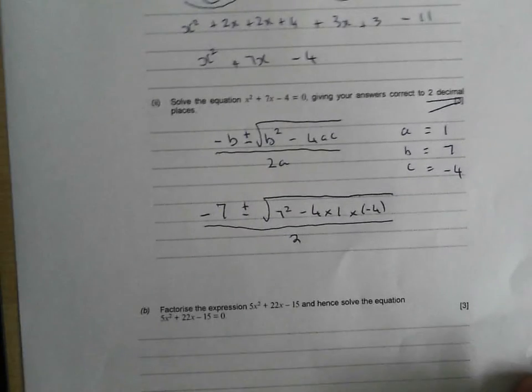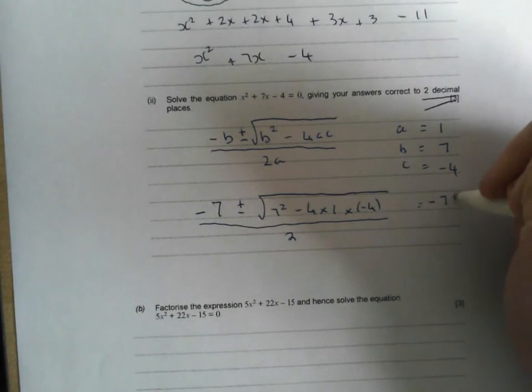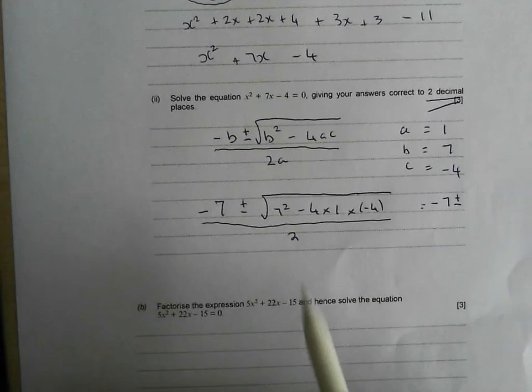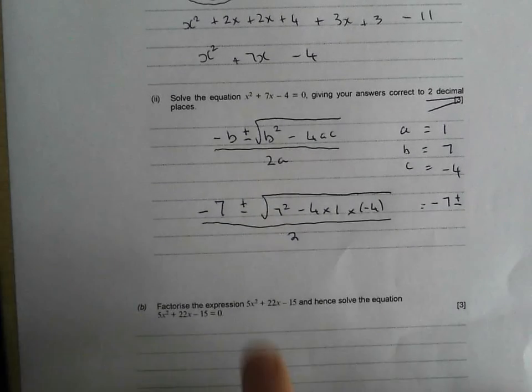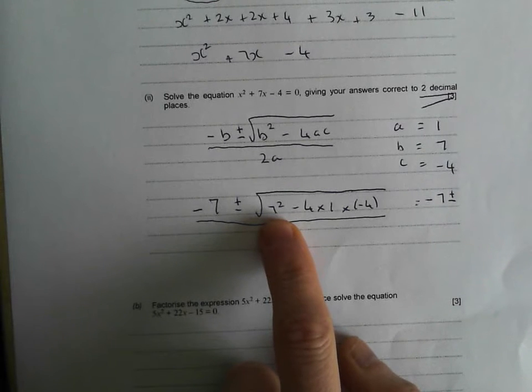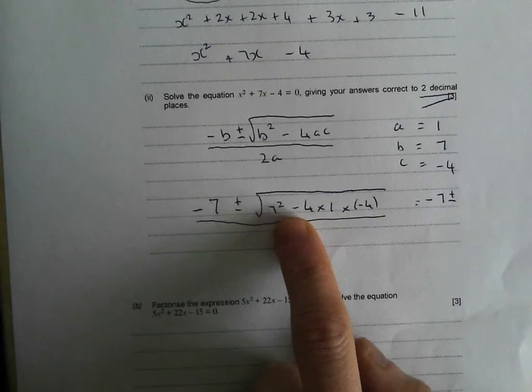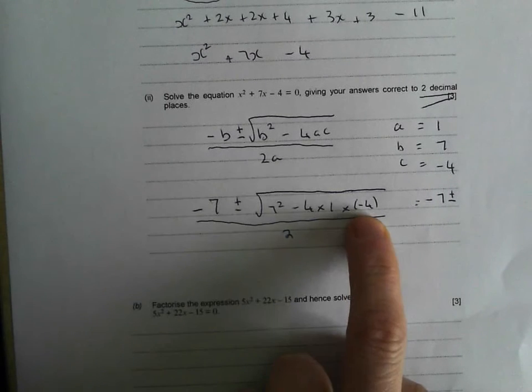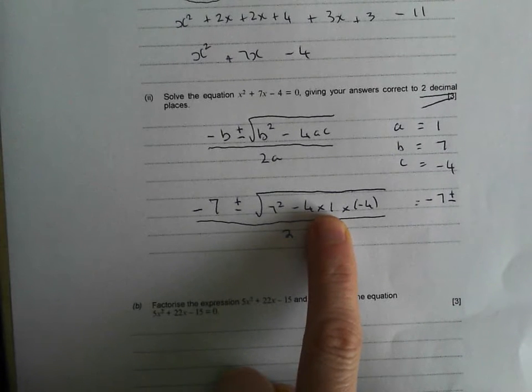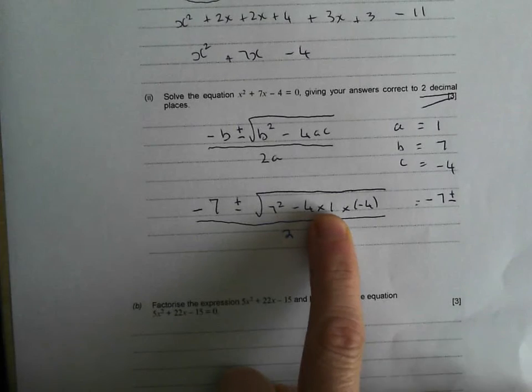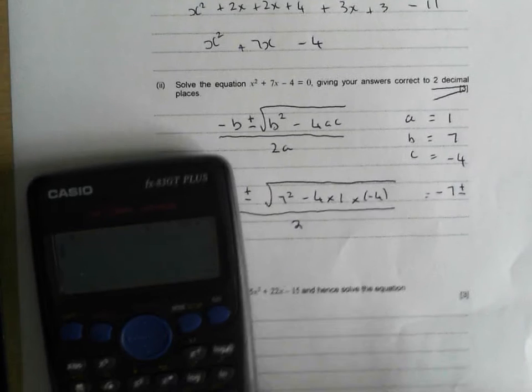I'm going to run out of space here, but I'll try and squeeze it in over here. So we get minus 7 plus or minus. Now I like to just test myself here. I like to work out my square root in my head first and then see if the calculator agrees. It's just like a double checking mechanism. 7 squared is 49, and then I've got minus 4 times 1 times another minus 4. Minus times a minus is going to give me a positive, and 4 times 4 is 16. So I reckon I've got 49 add on 16, which I think is like about 65 or something like that? Well yeah, I think so. We'll soon find out.